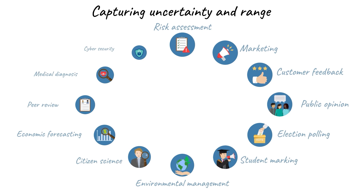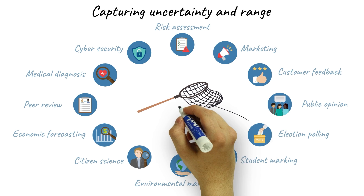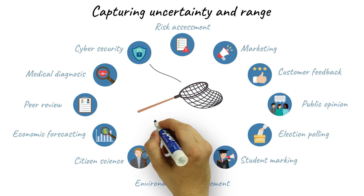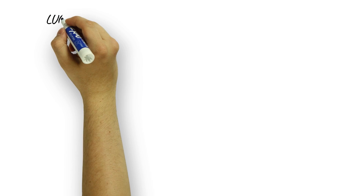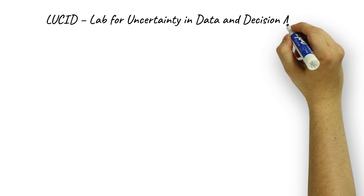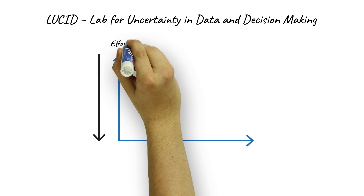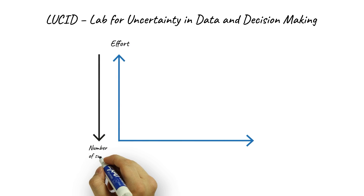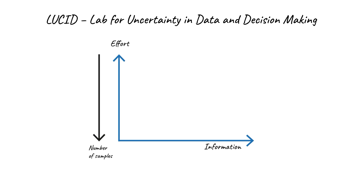Capturing and communicating uncertain information can be tricky, but it underpins many domains. Lucid works on data-driven decision support, which captures, processes and communicates uncertainty, vagueness and range to decision makers.